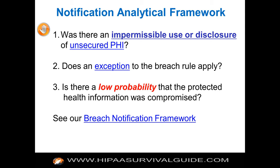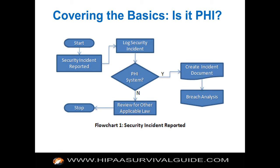Before asking whether there was a violation, ask: did this security incident pertain to an information system that had PHI in it to begin with? As an auditor, I'm going to say: talk to me about your security incident management system. How does it work? Where is it logged? Who is it communicated to? What analytical process do you go through? You should be logging all incidents — attempted breaches, real breaches. If you can't log them, how can you report on them? If this incident pertained to a system that contained PHI, you create an incident document and go on to the breach analysis. If the answer is no — it was your inventory system — you're done.